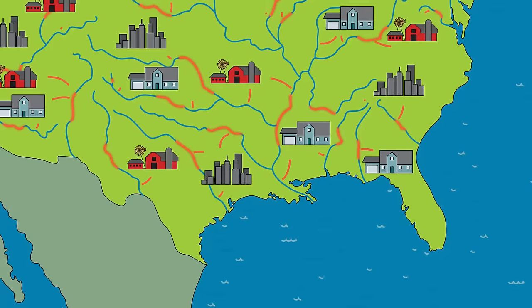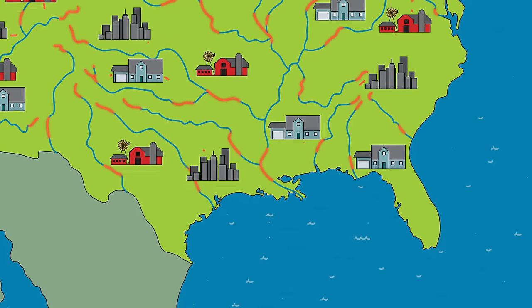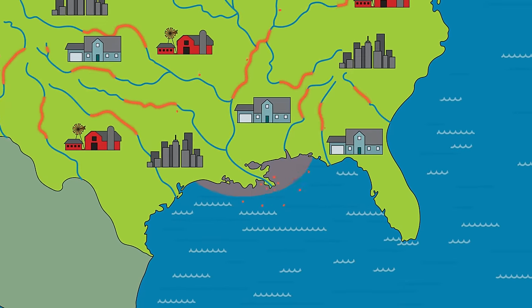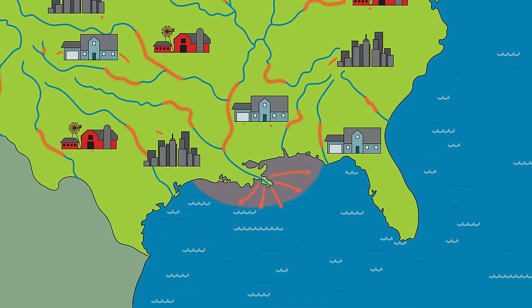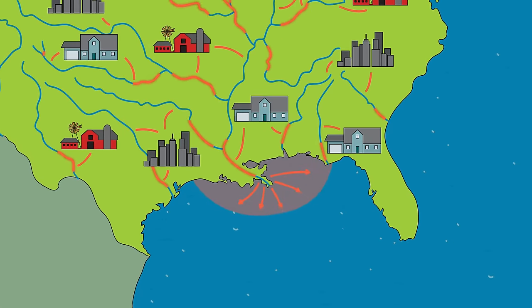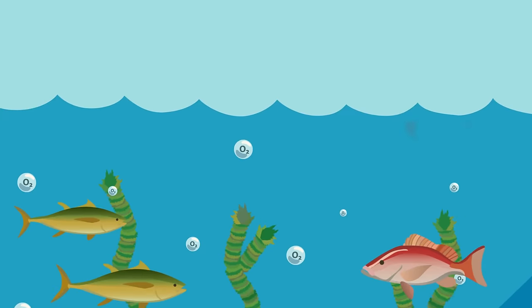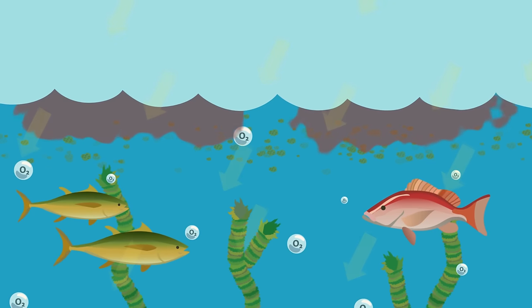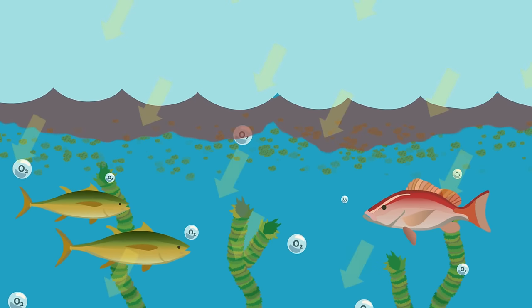It all starts when nutrients get into lakes and oceans. Remember, what's waste to humans can be food to plants and other creatures. Nutrients feed algae like they do other plants.